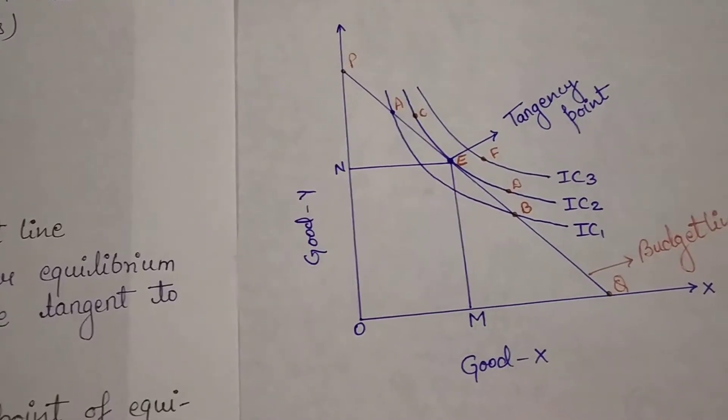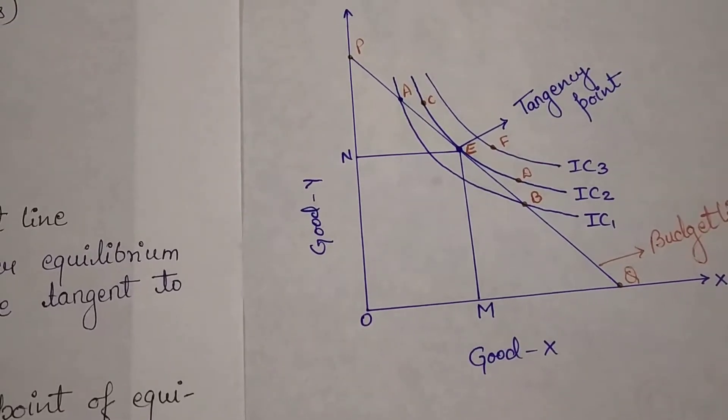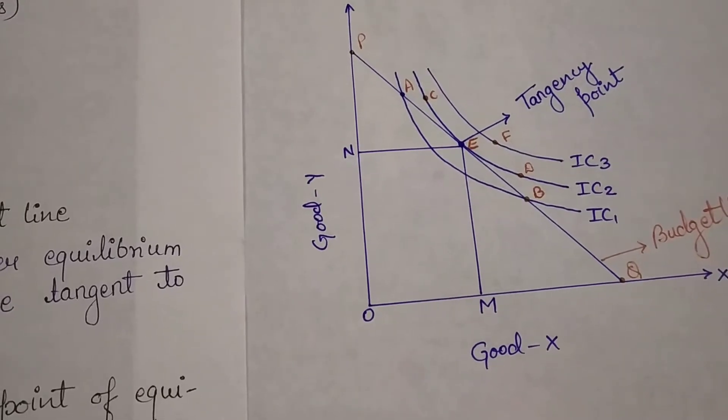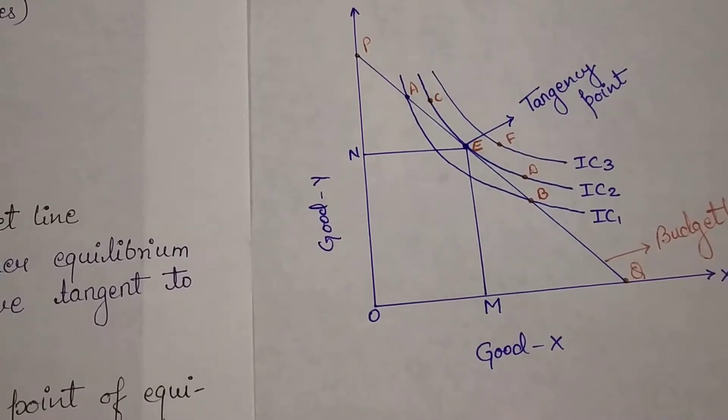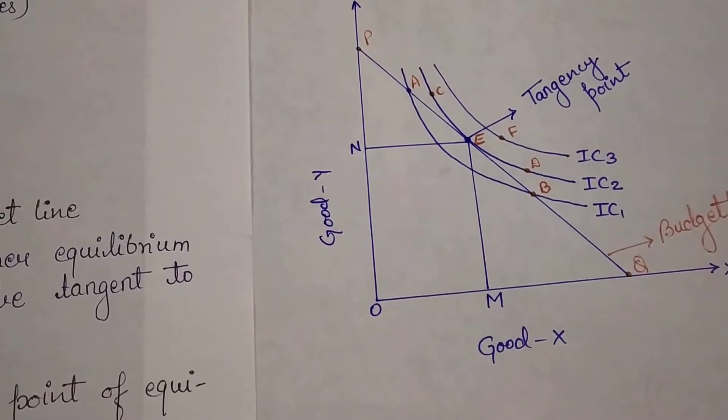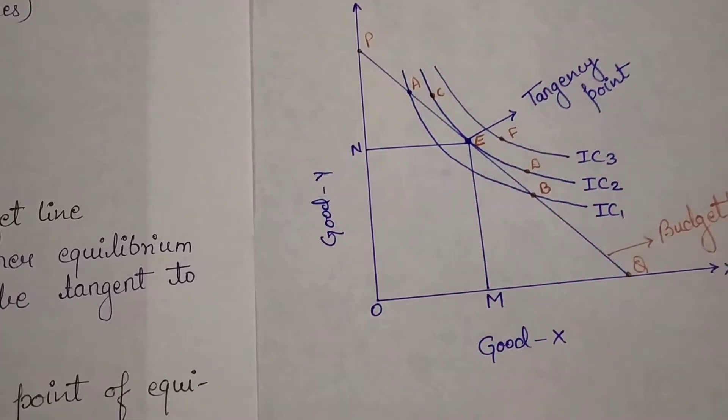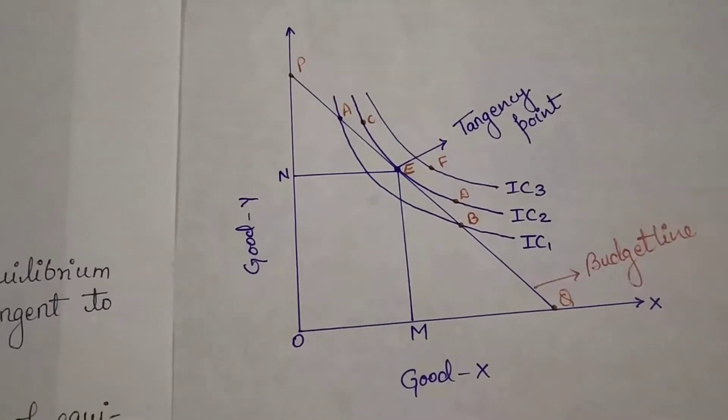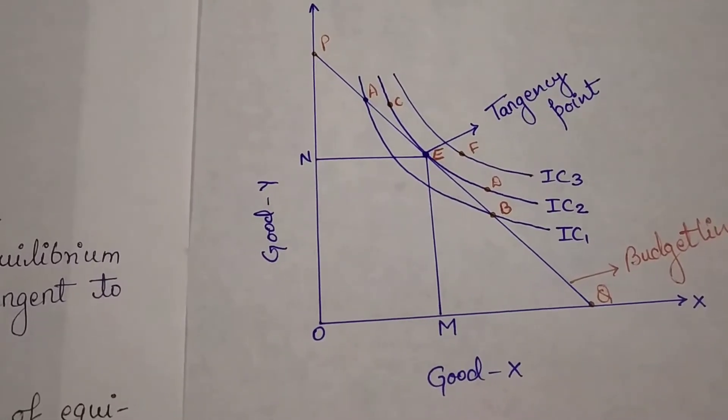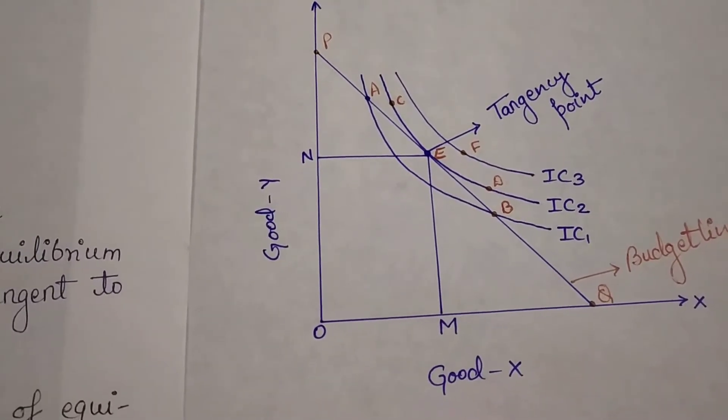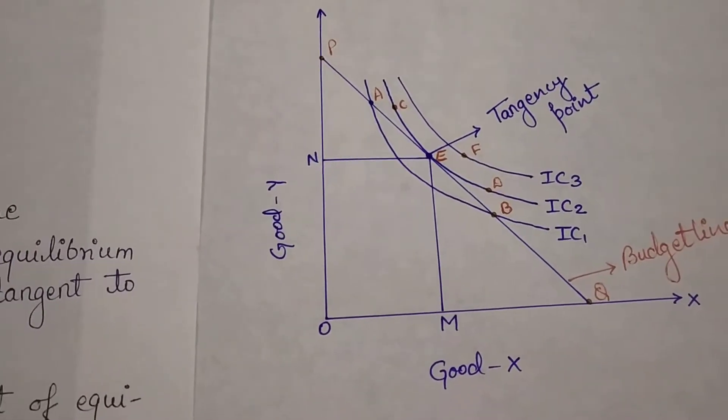When we shift from IC1 to IC2, IC1 represents lower level of satisfaction and it is possible for the consumer to attain higher satisfaction by moving to higher IC, that is IC2, with the same amount of money. Our budget is fixed, our budget line is fixed at PQ. We can shift from IC1 to IC2 in the same budget, so our satisfaction level will increase.